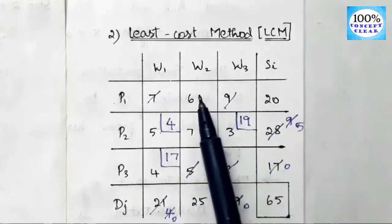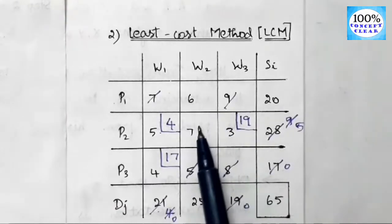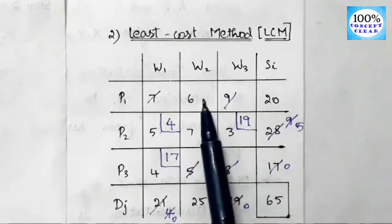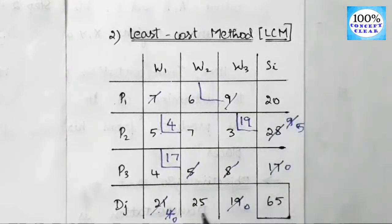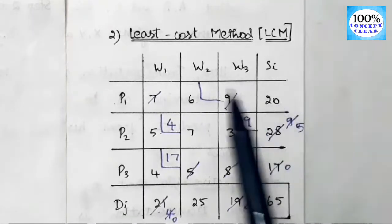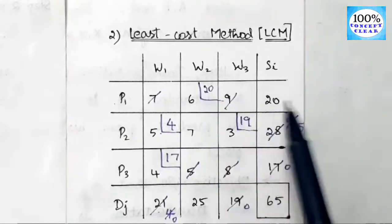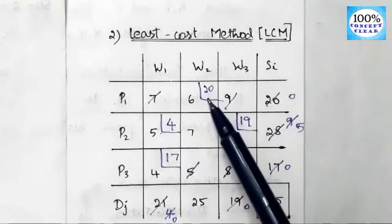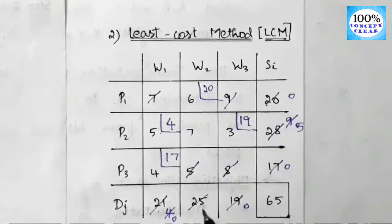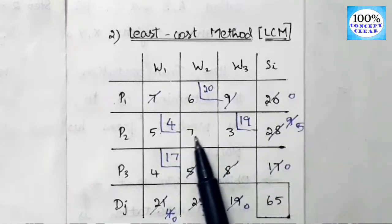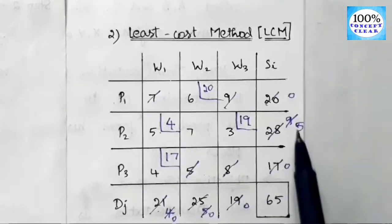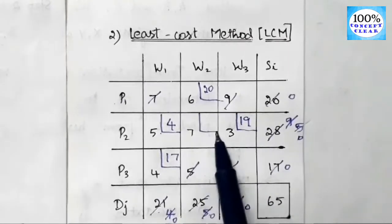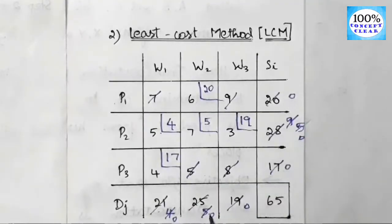For the fourth allocation, the two remaining cells have costs 6 and 7. The least value is 6. Compare demand and supply: supply is 20 and demand is 25. The least value is 20, so we allocate 20. Supply becomes 0 and demand becomes 25 minus 20, which is 5. For the fifth allocation, only one cell remains with supply 5 and demand 5, so we allocate 5. Demand and supply are both 0, so all allocations are complete.